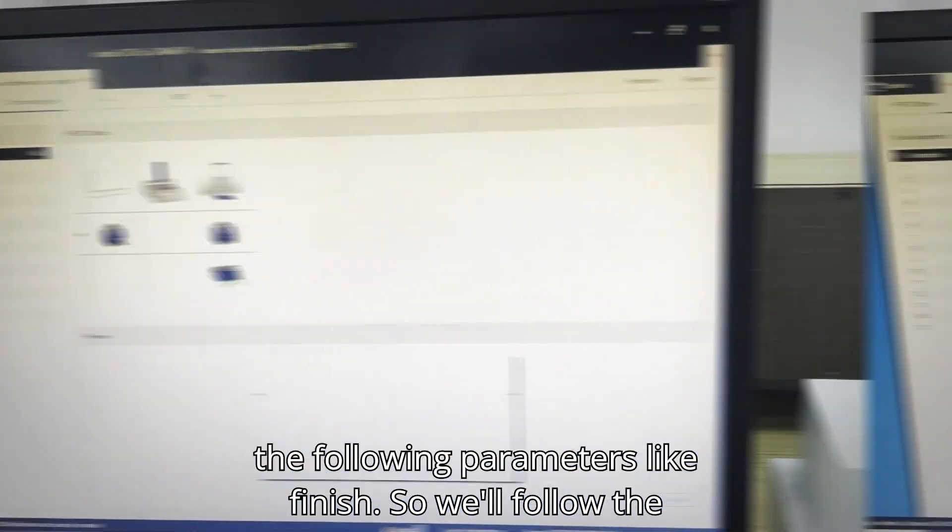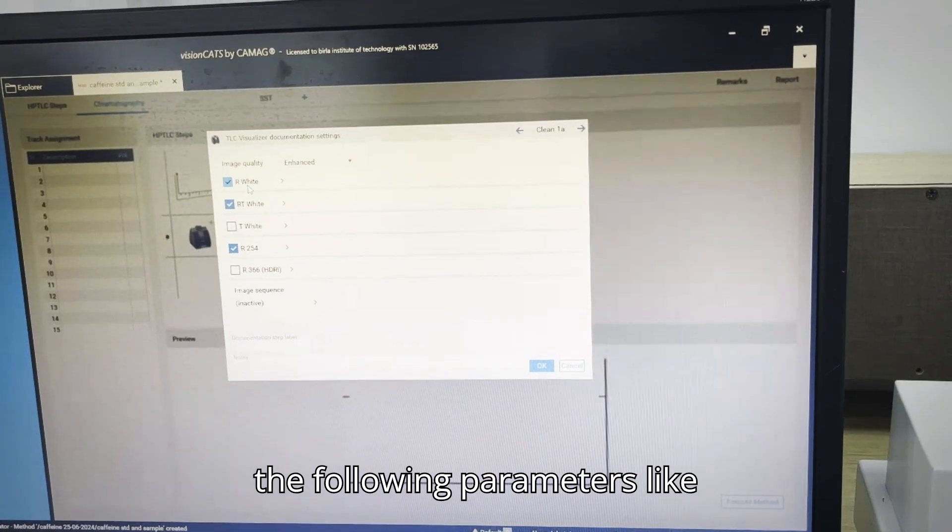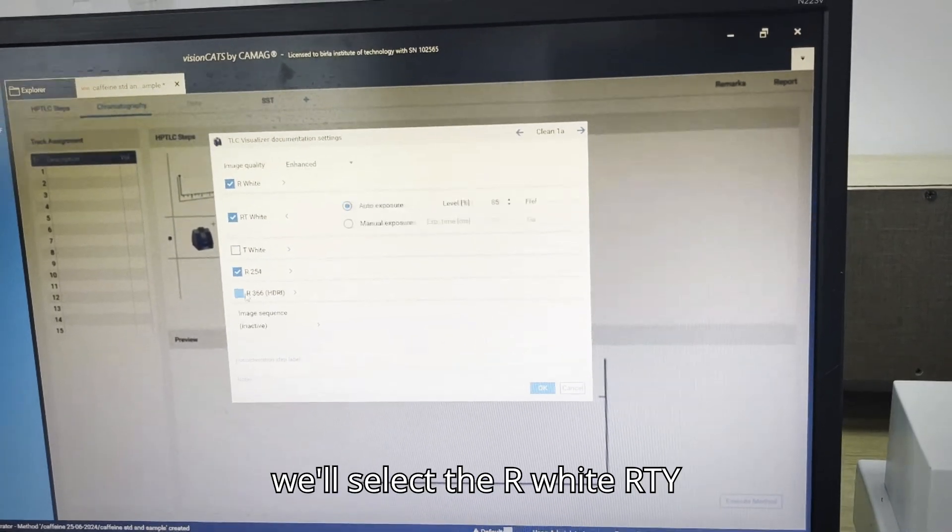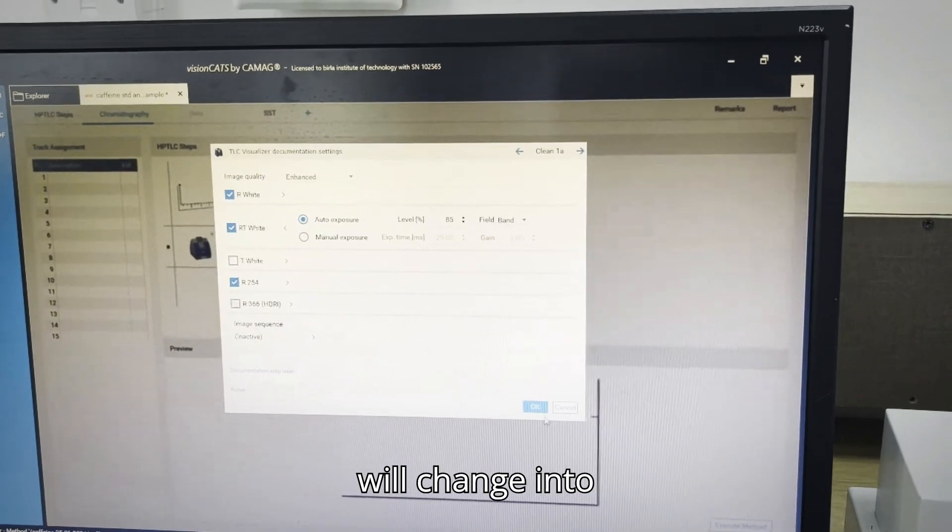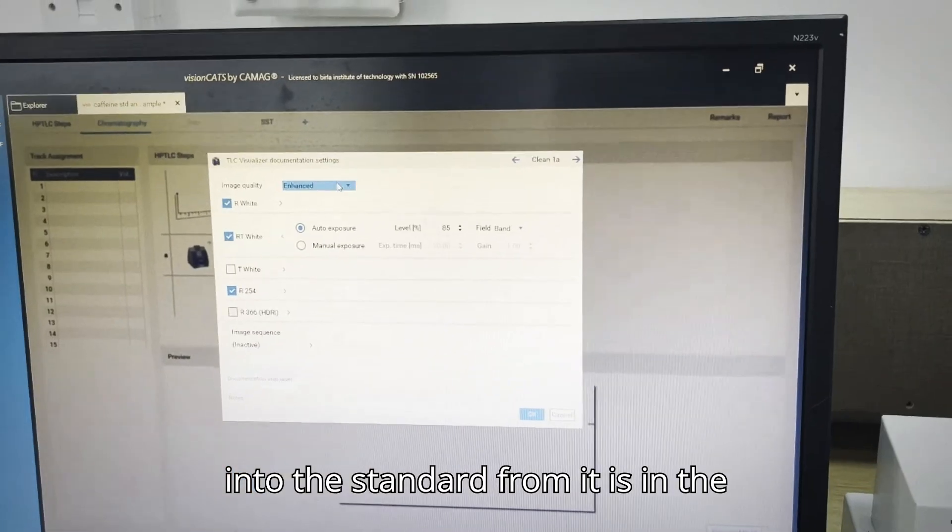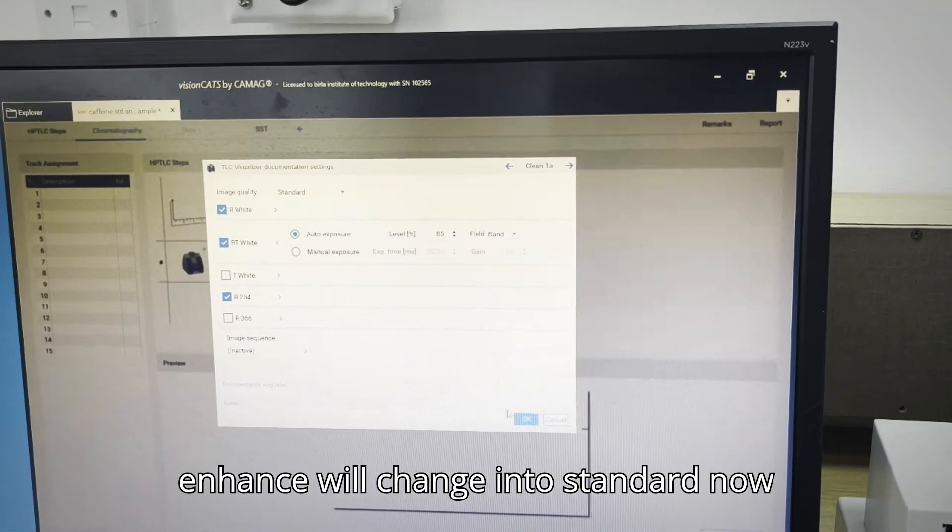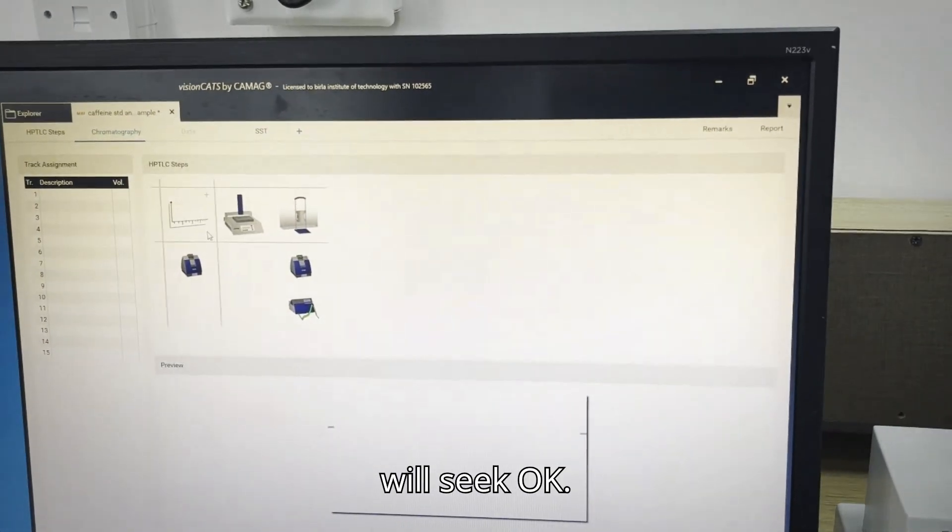We will follow the following parameters like we will select the RY, RTY, R254. Then we will change into the standard from enhanced, we will change into standard. Now we will click OK.